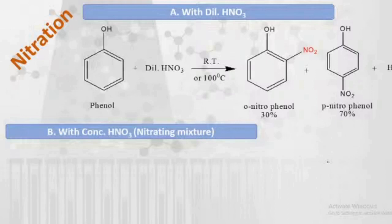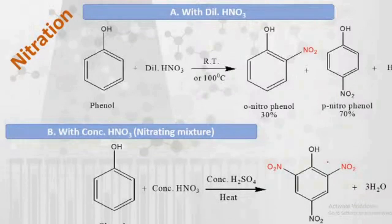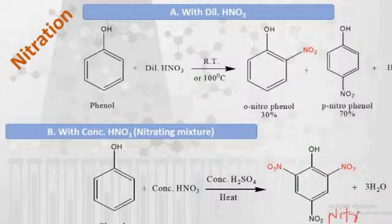The nitrating mixture is so called because it forms the nitronium ion, which we will see in the mechanism. Using the nitrating mixture on heating, phenol gives 2,4,6-trinitrophenol as the product, along with three water molecules as a byproduct.